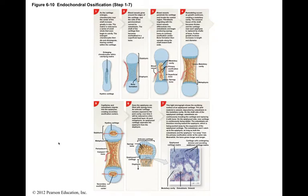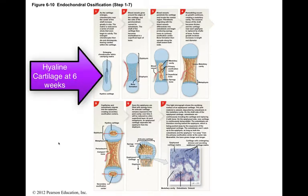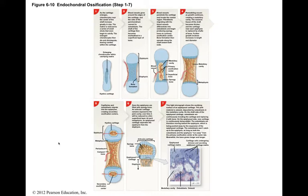By the time the embryo is six weeks old, the proximal bone of the limb is present but composed entirely of hyaline cartilage. This cartilage model continues to grow by expansion of the cartilage matrix, which we call interstitial growth, and the production of new cartilage at the outer surface, which we call appositional growth.